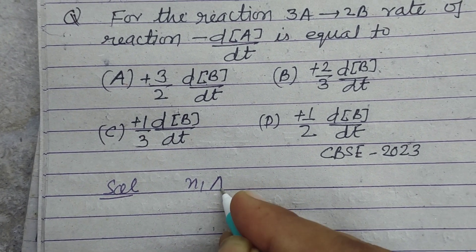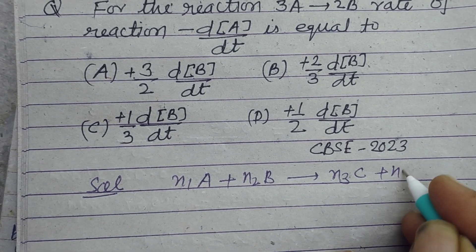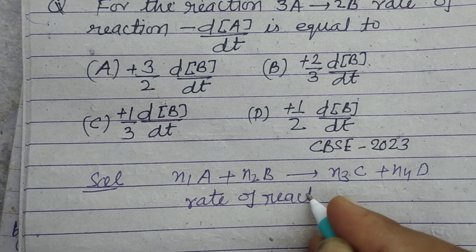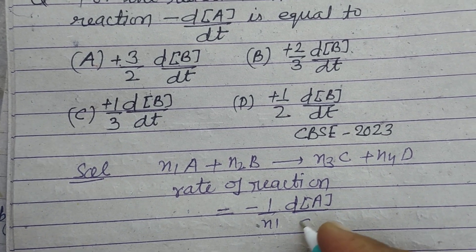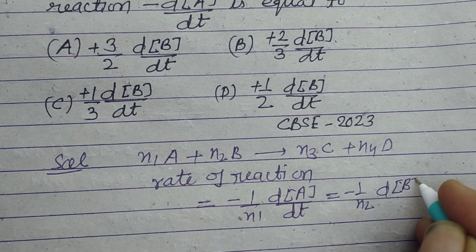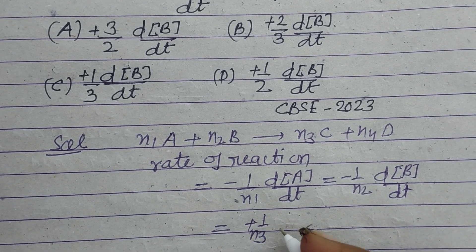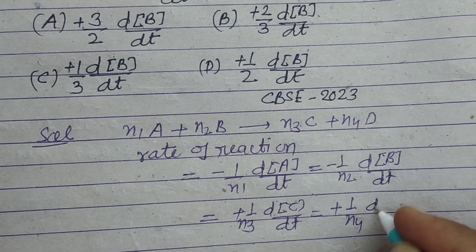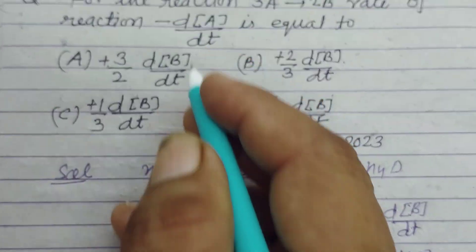we know that n1A plus n2B gave rise to n3C plus n4D, then rate of reaction is equal to minus 1 upon n1 dA upon dt equal to minus 1 upon n2 dB upon dt equal to plus 1 upon n3 dC upon dt equal to plus 1 upon n4 dD upon dt.